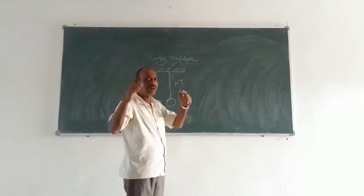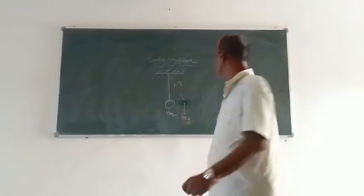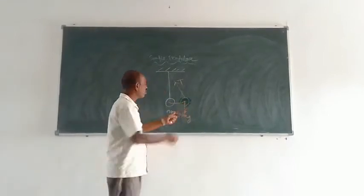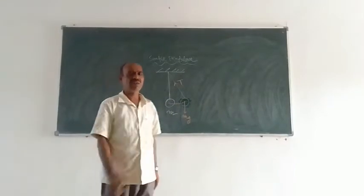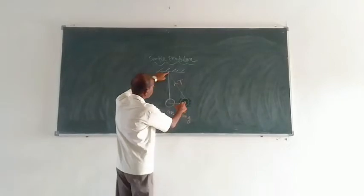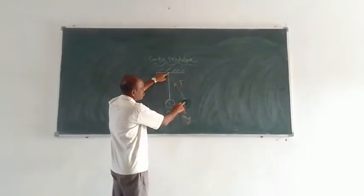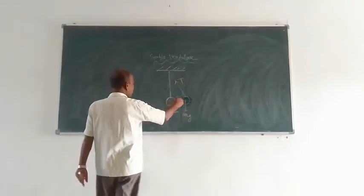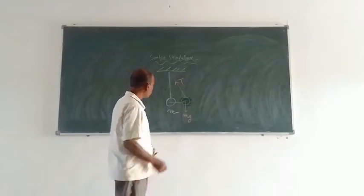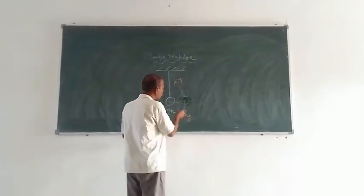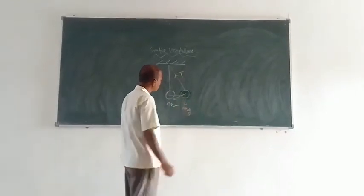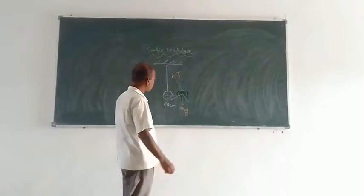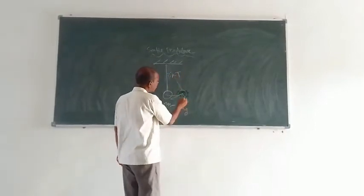This weight can be resolved into two components. When you release this bob, it will execute a motion and come back in this direction, on an arc of radius equal to the length of the thread — from the center of the bob up to the pivot. Now, a perpendicular line can be drawn, and you know that this line is parallel to the thread. So if this angle is theta, then this angle is also theta.